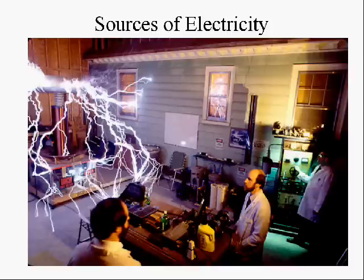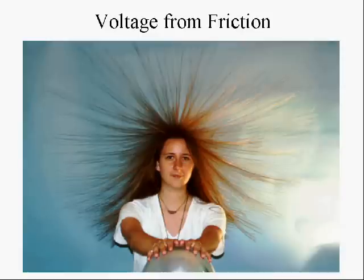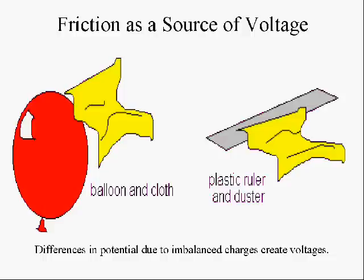Welcome to the world of electricity and electronics. I'd like to talk about sources of electricity — different ways that electricity can be produced. Voltage can be produced from friction. Simply rubbing things together can produce electricity. Some materials such as rubber and cloth or plastic can be used to produce electric voltages just by putting them in contact with each other.